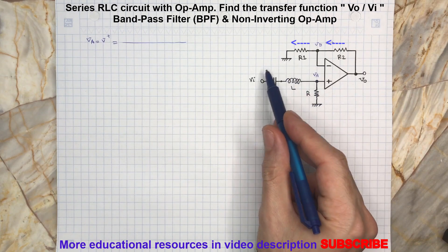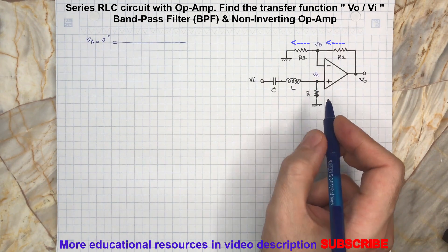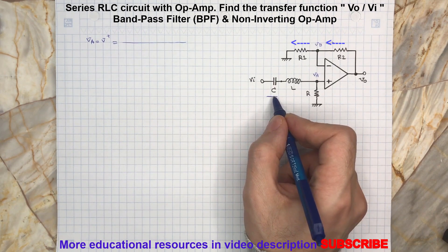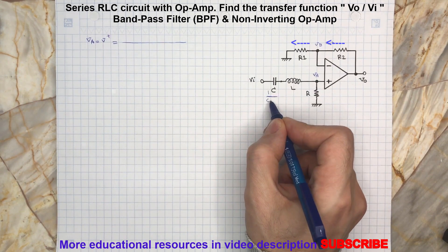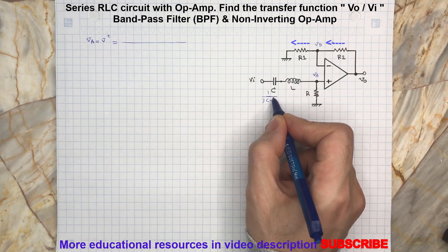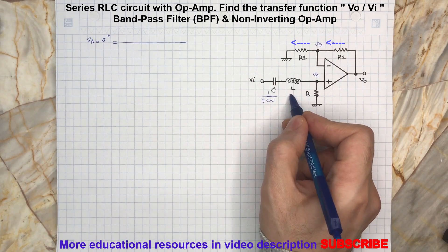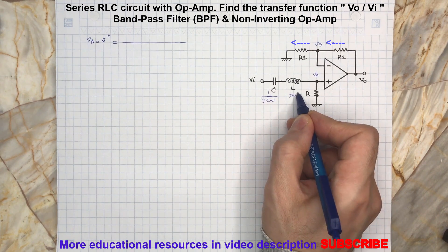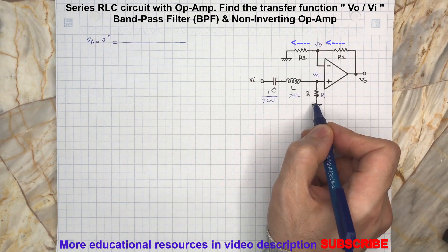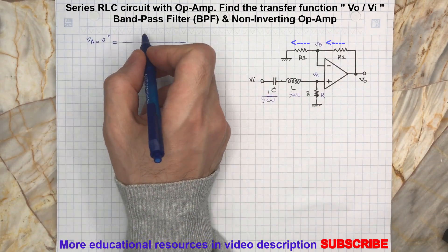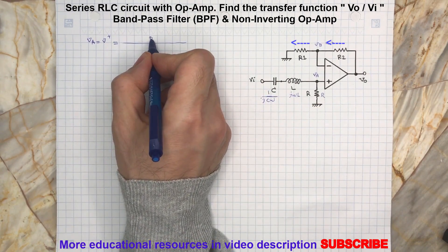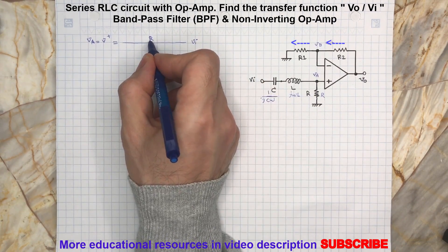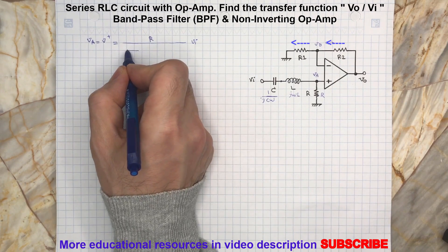Basically, this part is a voltage divider, so let's use the frequency domain. We call this capacitor 1 over jωC, this one is jωL, and it remains R. So it's going to be a voltage divider here — Vi here, R here, and the rest of the impedances here.